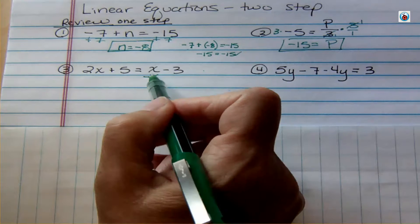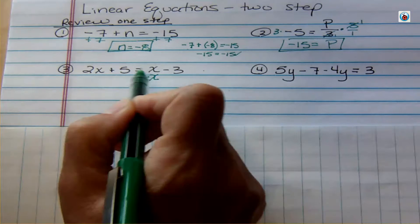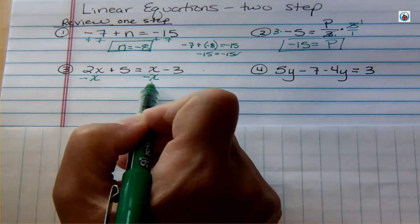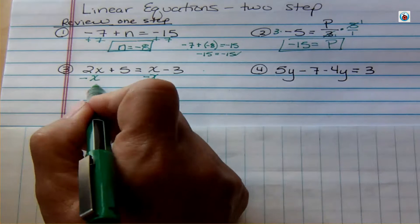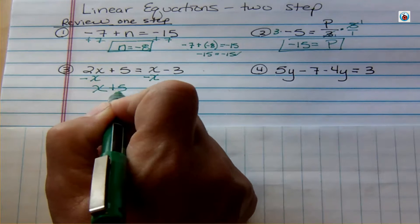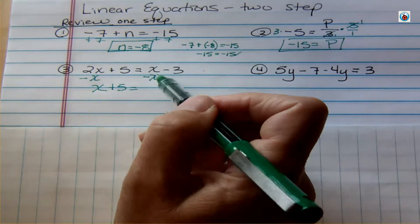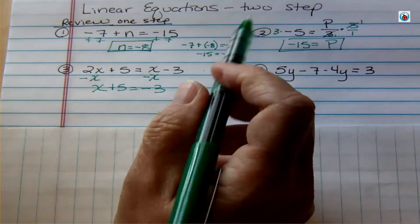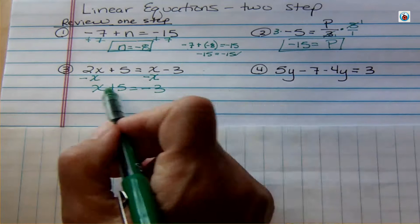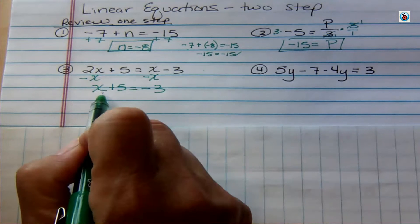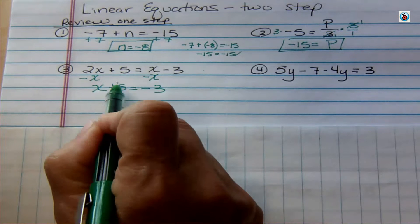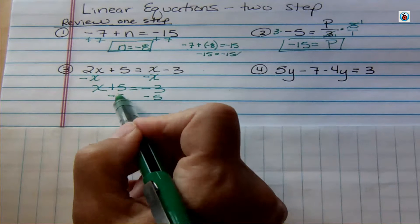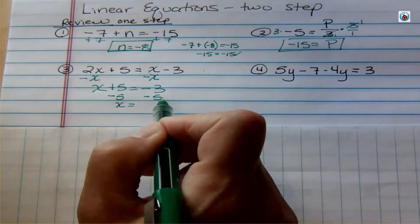Remember you can only subtract like terms — same variable to the same power. Line up x with the negative x, not with the 5. We keep the equation balanced by doing the same thing to both sides. Two x's minus one x leaves x, and the plus 5 is still there. On the right, x minus x are additive inverses, so they cancel to 0, leaving negative 3. Now subtract 5 from both sides to isolate x, giving x equals negative 8.